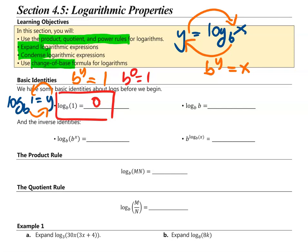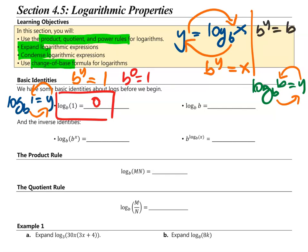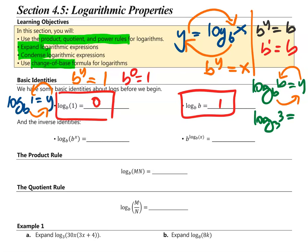How about log base b of b? Log base b of b equals y. Rewriting in exponential form: b raised to y equals b. The power is 1, because b raised to 1 is equal to b. For example, log base 3 of 3 equals 1, because 3 raised to 1 is equal to 3. So, log base b of b is equal to 1.